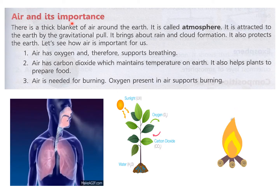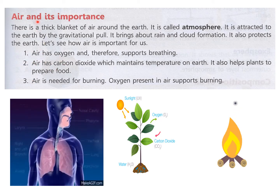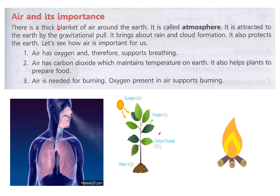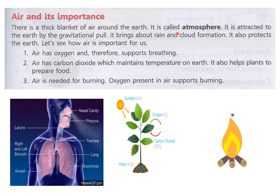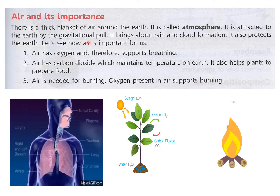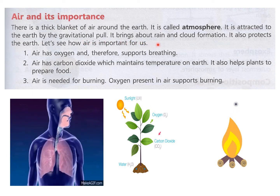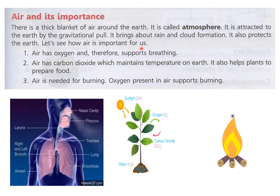Air and its importance: there is a thick blanket of air around the earth called the atmosphere, which you have already seen. It is attracted to the earth by the gravitational pull — at the center of the earth there is a magnetic field due to the iron core, which creates gravitational pull that keeps the atmosphere around the earth. The atmosphere brings about rain and cloud formation, and also protects the earth.